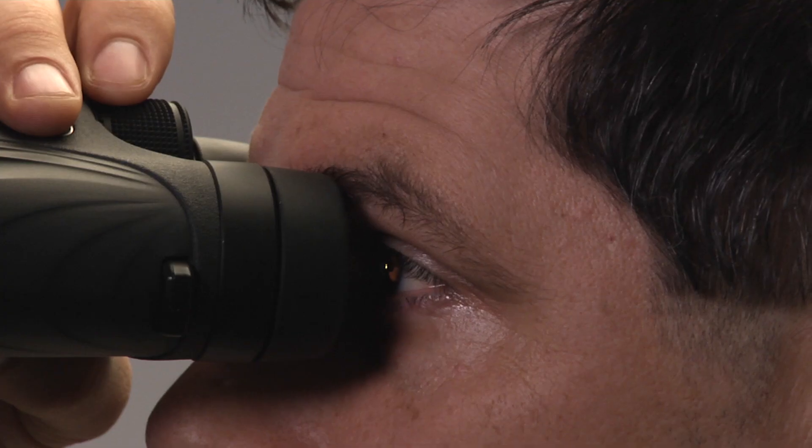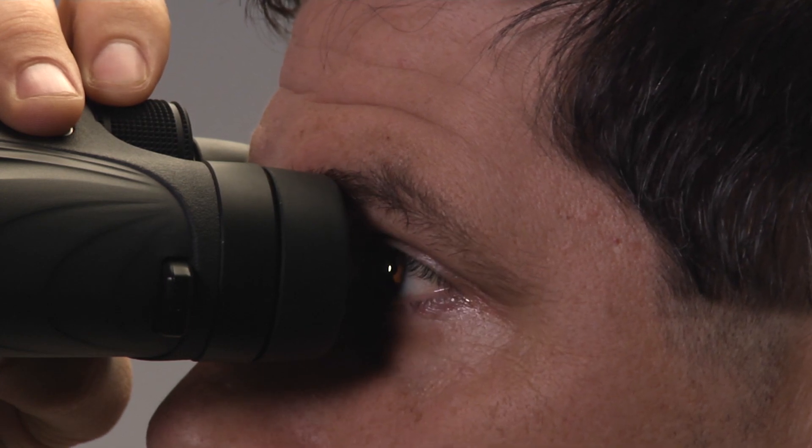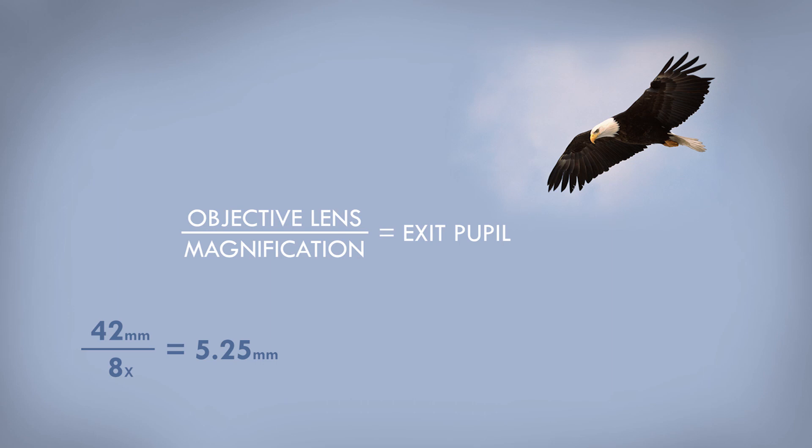The exit pupil on a pair of binoculars is simply the shaft of light that exits the backside of the binocular and hits the surface of your eye. It's determined by the magnification of a pair of binoculars in conjunction with the size of the front lens.